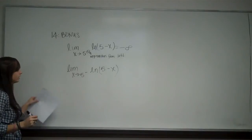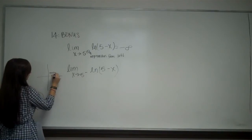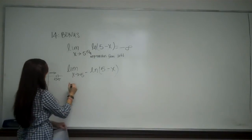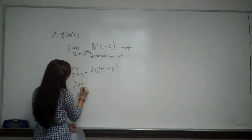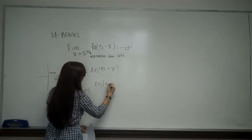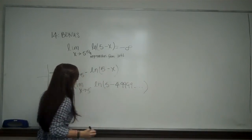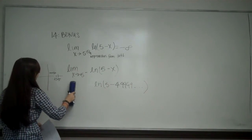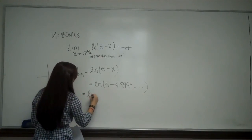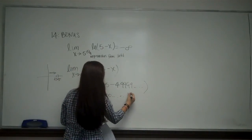So 5 from the left — if I'm looking at a graph and I have the value of 5, if I'm approaching it from the left, the next value would be like 4.99999. So the limit becomes the natural log of 5 minus 4.99999. This is going to be the natural log of something like 0.0000001, or say, 0.001.